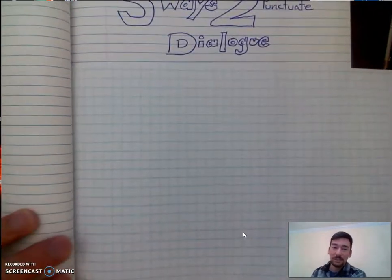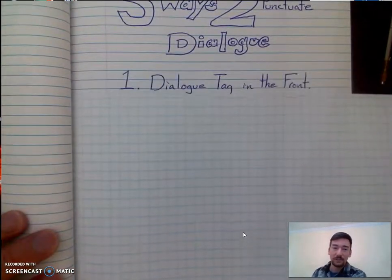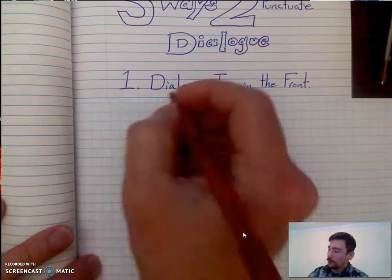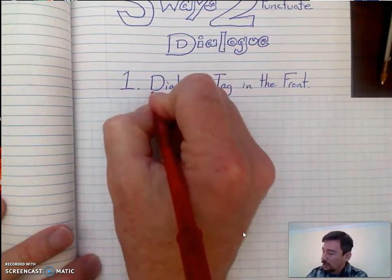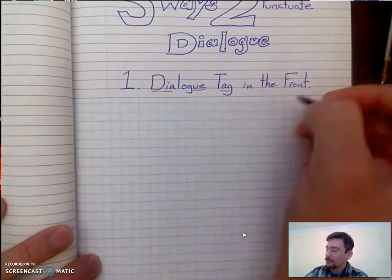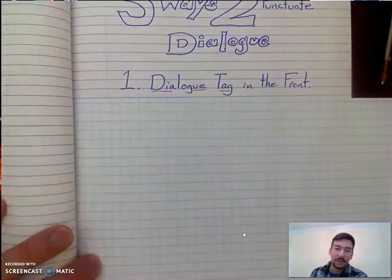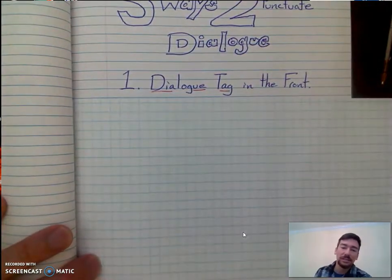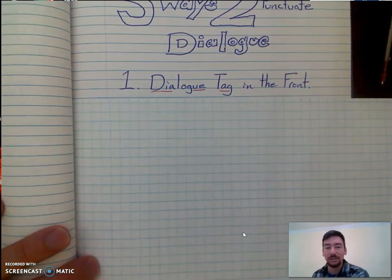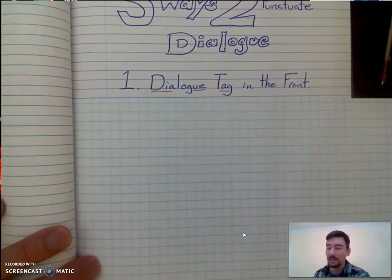All right, so let's look at the first way to punctuate dialogue. The first way is to have the dialogue tag in the front. And what that means is the he said, she said, Mark said, Jack said — all that information is going to be at the front of the sentence.